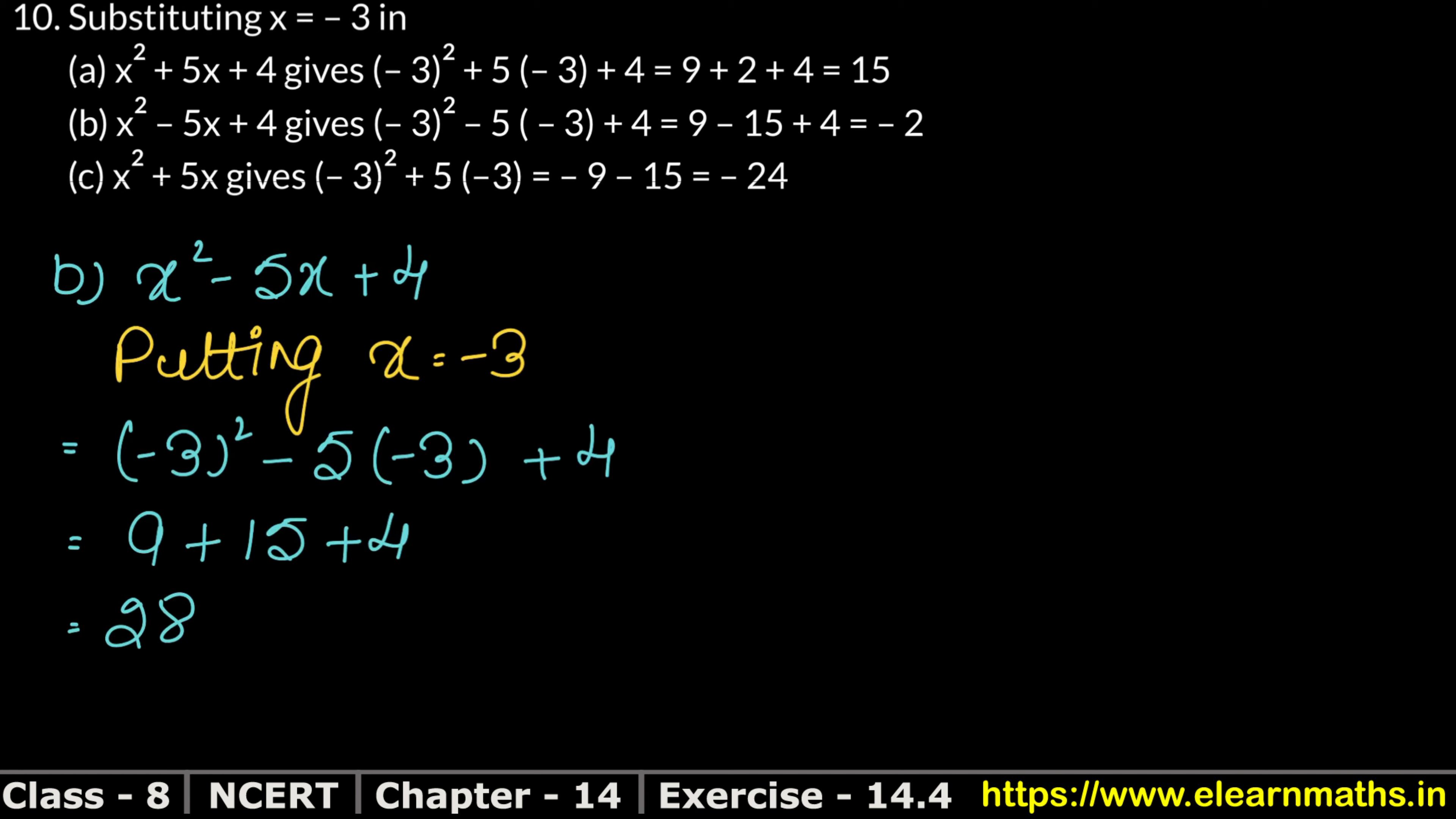9 plus 5 is 14, 14 plus 4 is 18, carry 1 and 2. So this is coming as 28. But the answer is coming as minus 2. So we can write: on putting x equals to minus 3 in equation x² - 5x + 4, it gives 28 instead of minus 2.